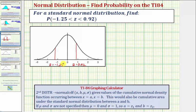The area under the curve between these two z-scores is the same as the probability that z is greater than negative 1.25 and less than 0.92. So we'll use the TI-84 graphing calculator to determine this area, which is the same as the probability we're looking for.